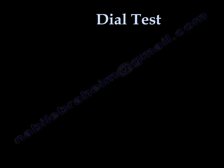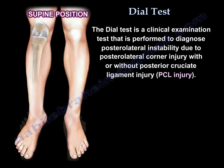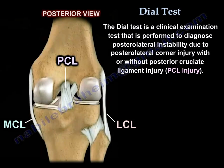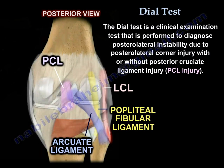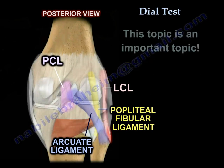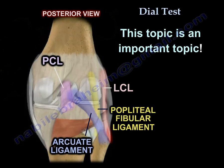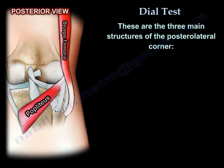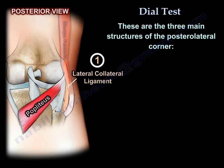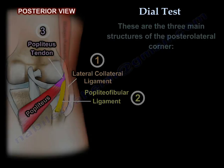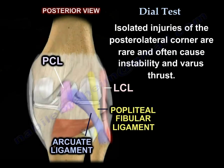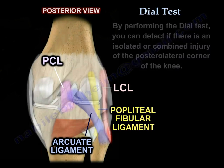The Dial Test is a clinical examination test performed to diagnose posterolateral instability due to posterolateral corner injury, with or without posterior cruciate ligament injury. The three main structures of the posterolateral corner are the LCL (lateral collateral ligament), the popliteofibular ligament, and the popliteus tendon. Isolated injuries of the posterolateral corner are rare and often cause instability and varus thrust.